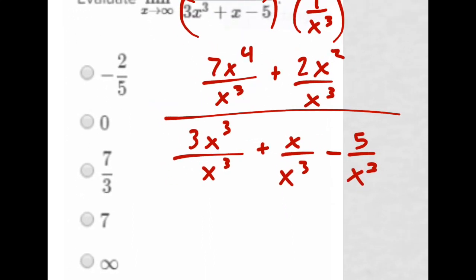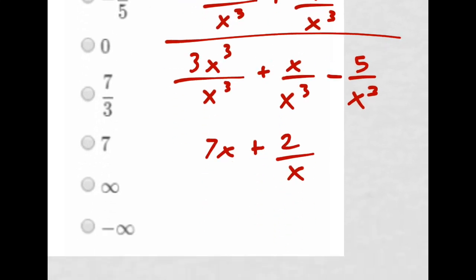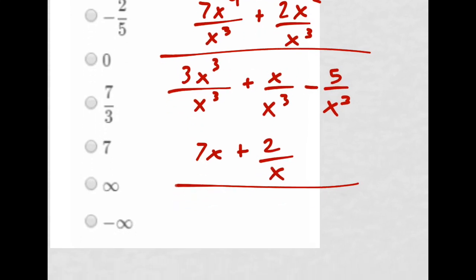Here I get an x in the top, so I have 7x, plus 2 over x. In the bottom, those cancel to 3, plus 1 over x squared, minus 5 over x cubed.